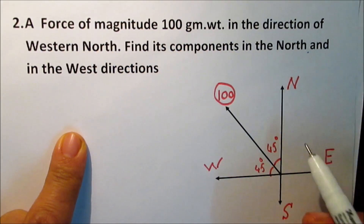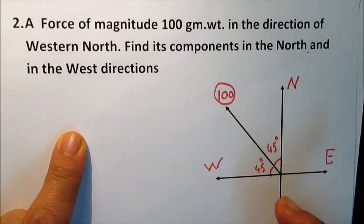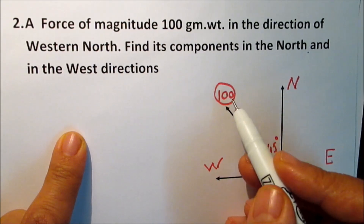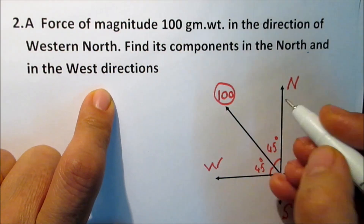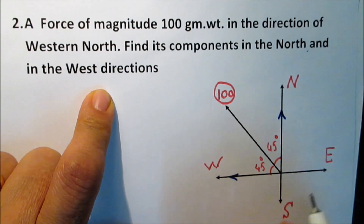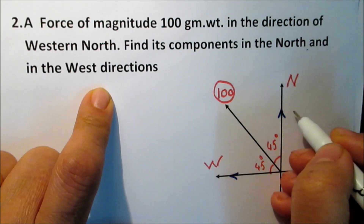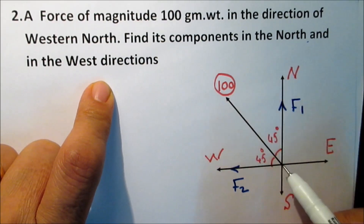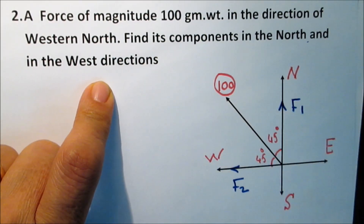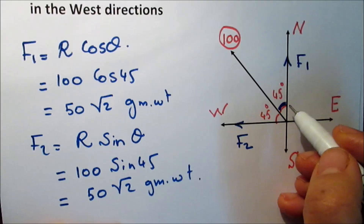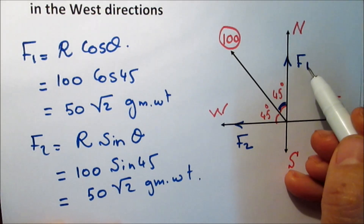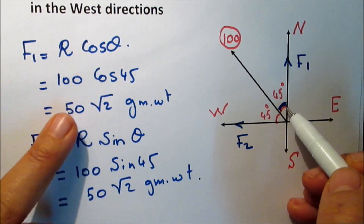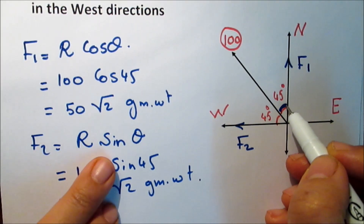Western north is in the middle between north and west, so it is 45 degrees from both sides. The given force is 100 gram weight. Find its components in the north and west directions. Since the angle is in the middle, the two components will be equal. Assume theta is the angle adjacent to F1, so F1 equals R·cosine(theta) and F2 equals R·sine(theta).